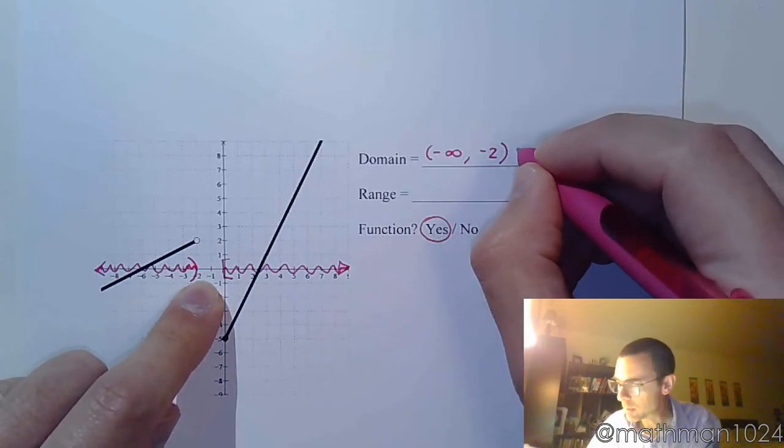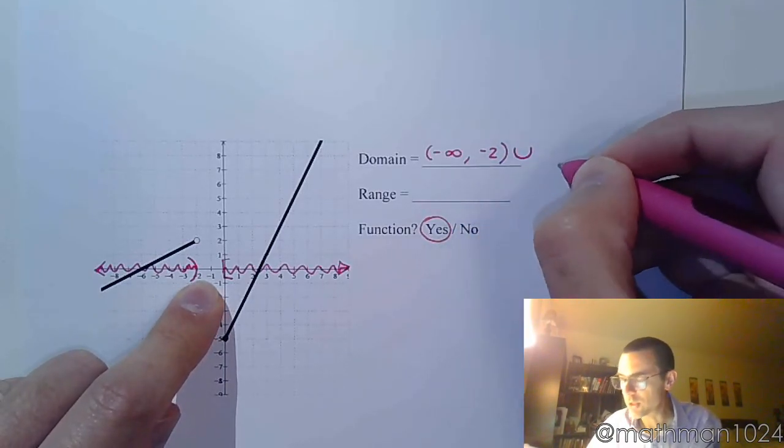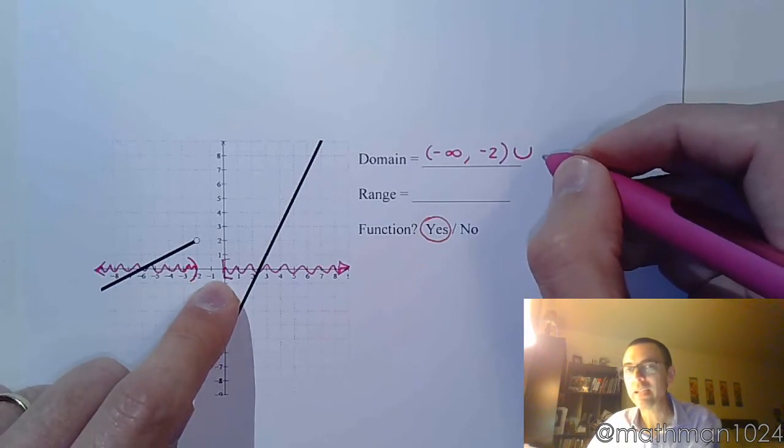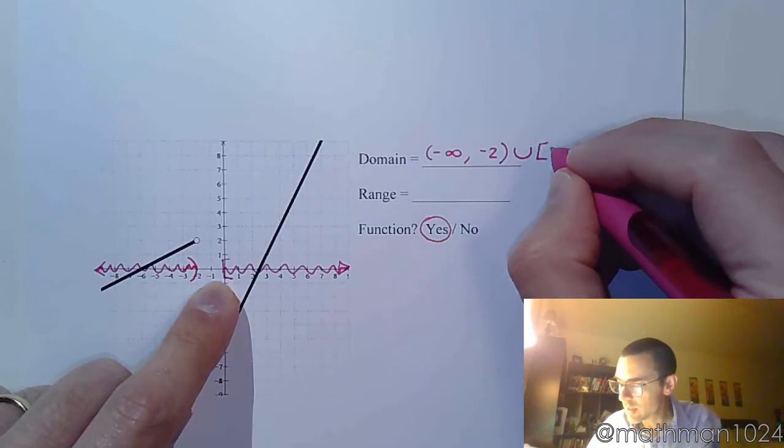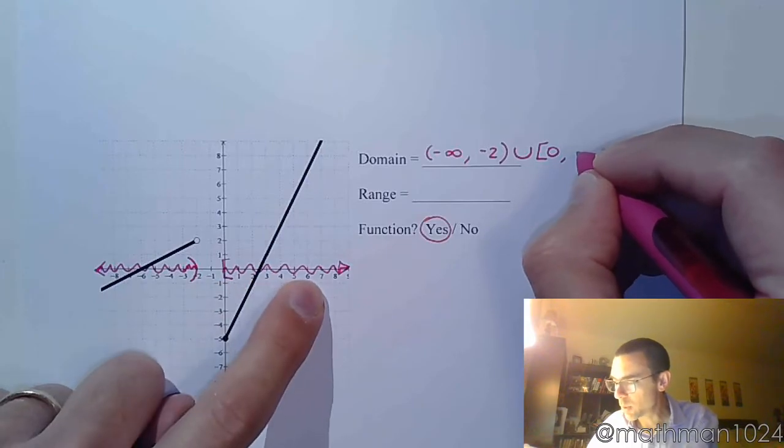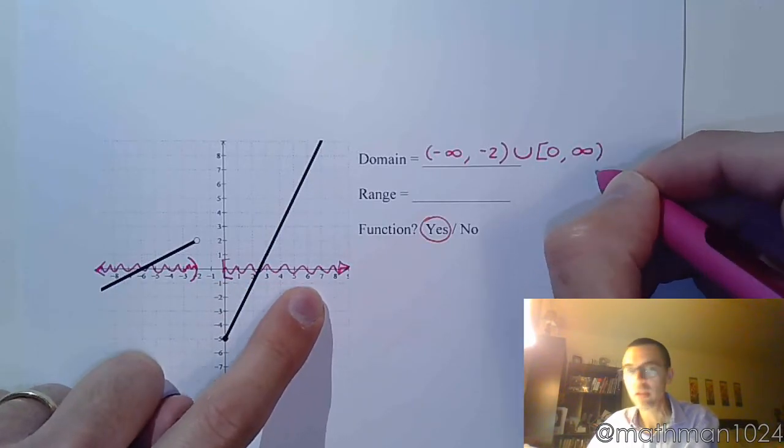You just focus here. I see that I'm coming from negative infinity to negative 2 parentheses. There's a jump. There's a small gap. That's a gap nonetheless, so that's union. You pick back up at an x value of 0, and you go all the way to the right toward infinity.